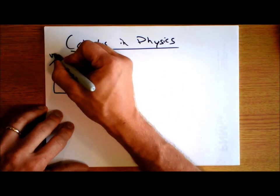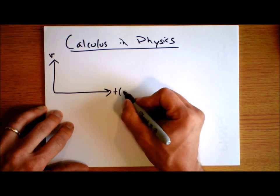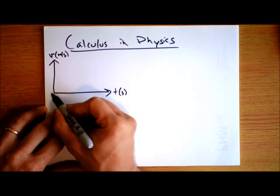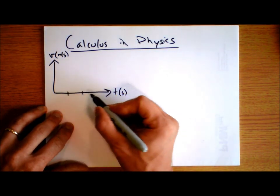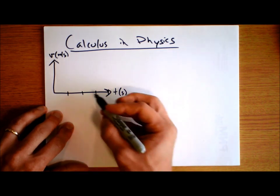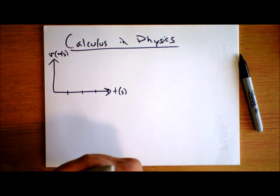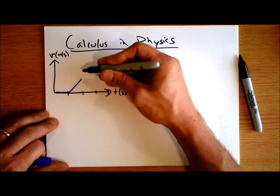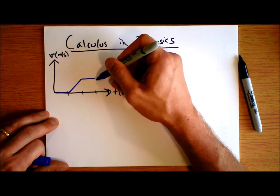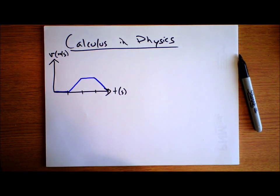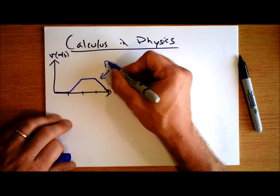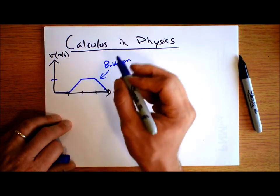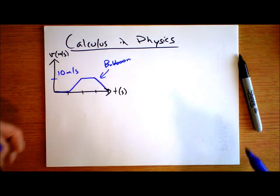If you have a graph of velocity versus time — say time is in seconds and velocity is in meters per second — and we have this baboon, and over the period of four seconds that baboon starts with a velocity of zero, then it goes up to some value, stays there for a little bit, and then the baboon stops. We'll say that peak value is 10 meters per second.